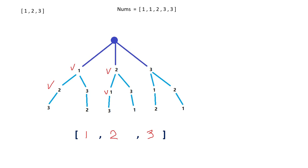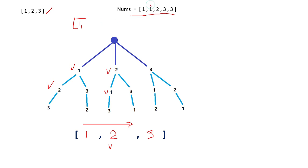In Permutation 1, since only distinct numbers existed, we simply checked if the current number was already included in the growing list using list.contains. But we can't apply the same logic here for the duplicate case, because we ultimately have to make use of all the numbers. If we use list.contains and the list already contains a 1, we would skip the second 1, producing a wrong result.